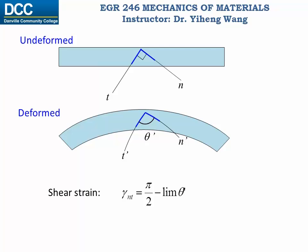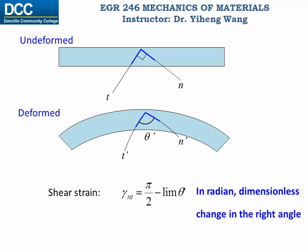In other words, at the same point the shear strain will be different for a different orientation. The angles here are both in radian, which is dimensionless, therefore shear strain is also dimensionless. The shear strain simply describes the change in the right angle. If gamma is positive, that means the angle has become smaller, and if gamma is negative, that means the angle becomes larger.